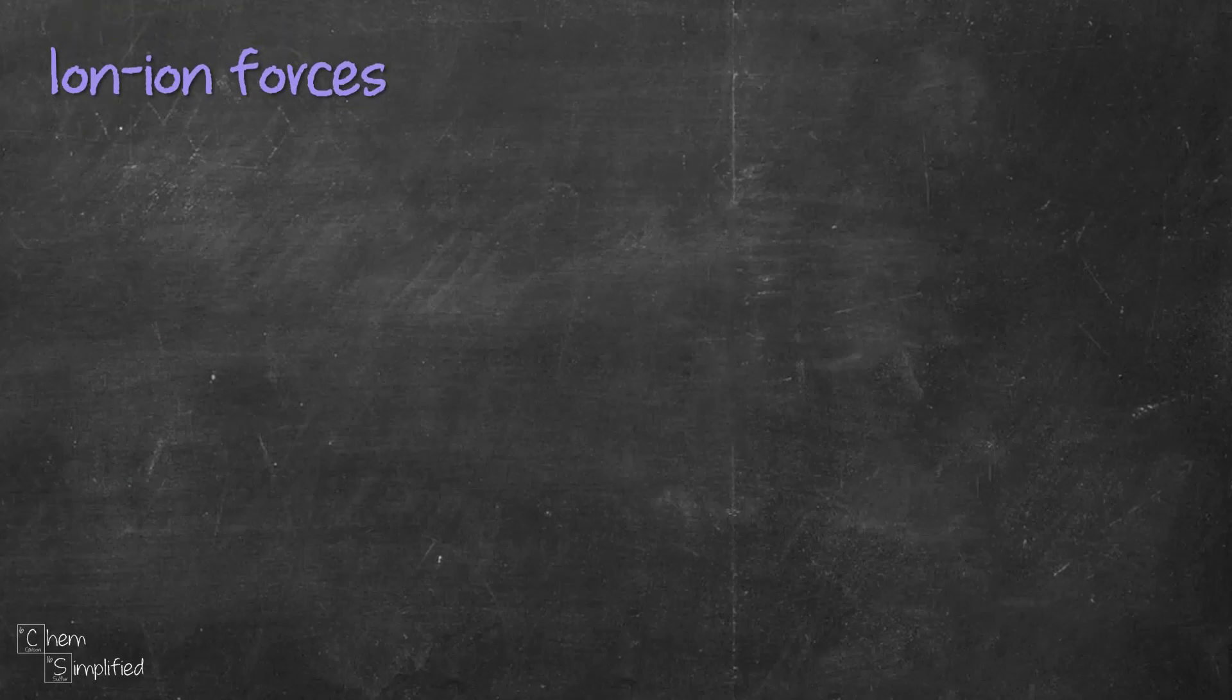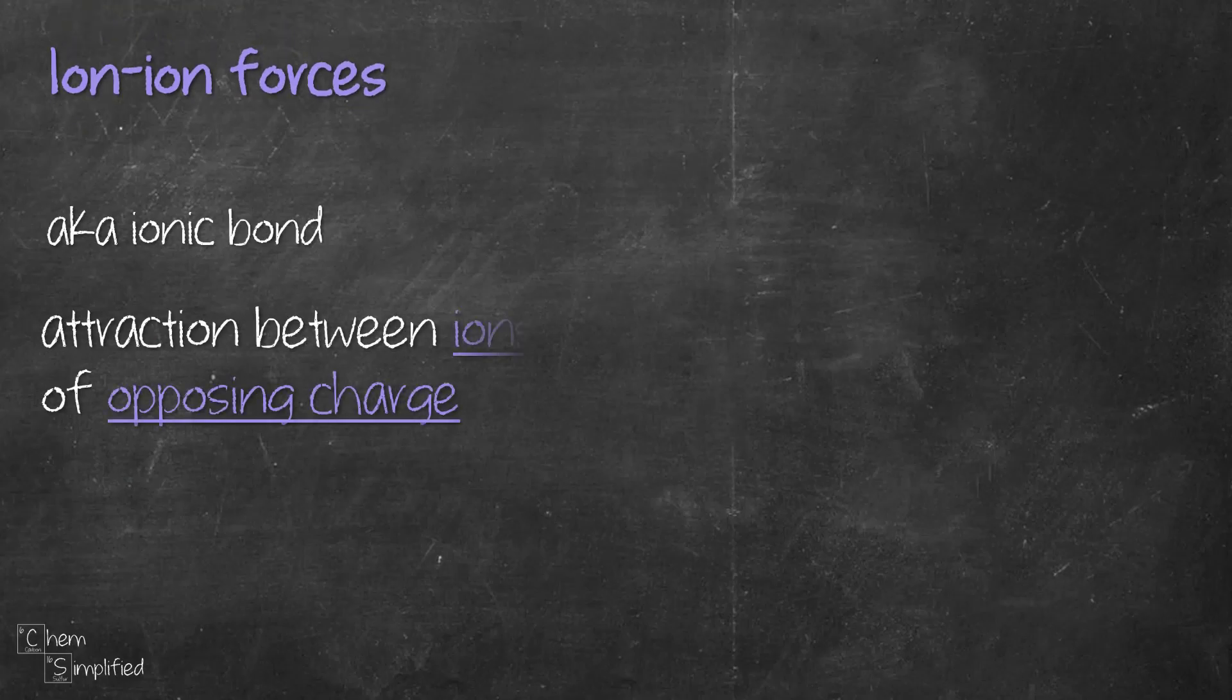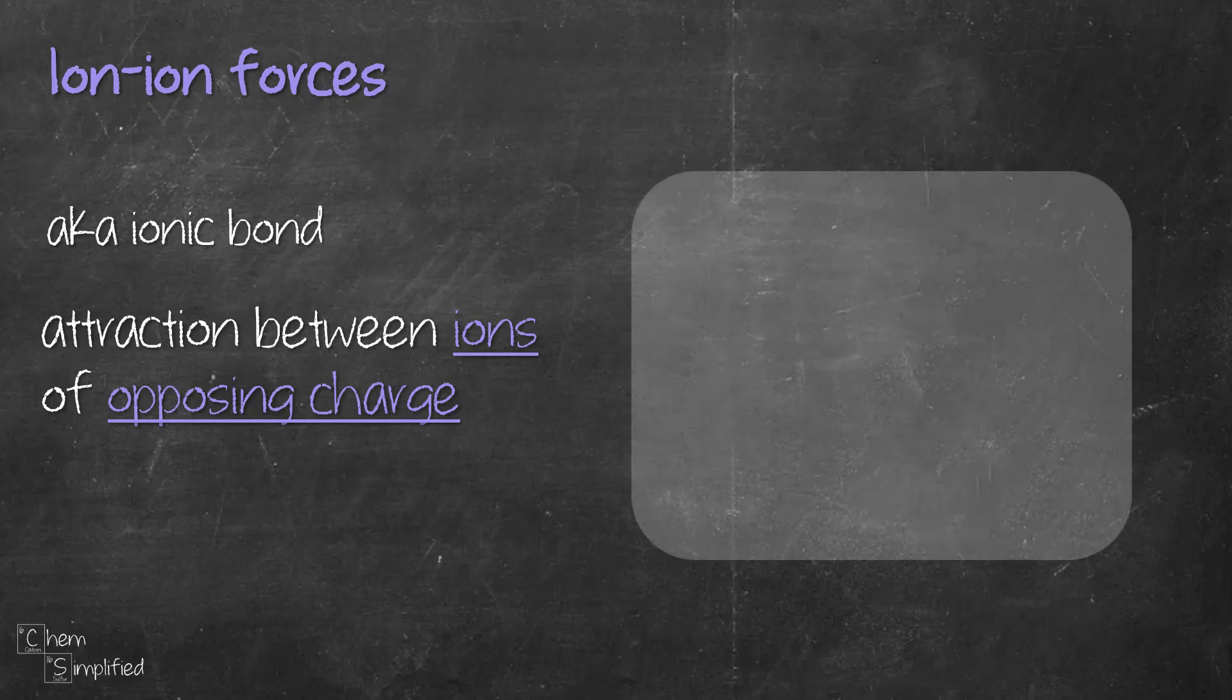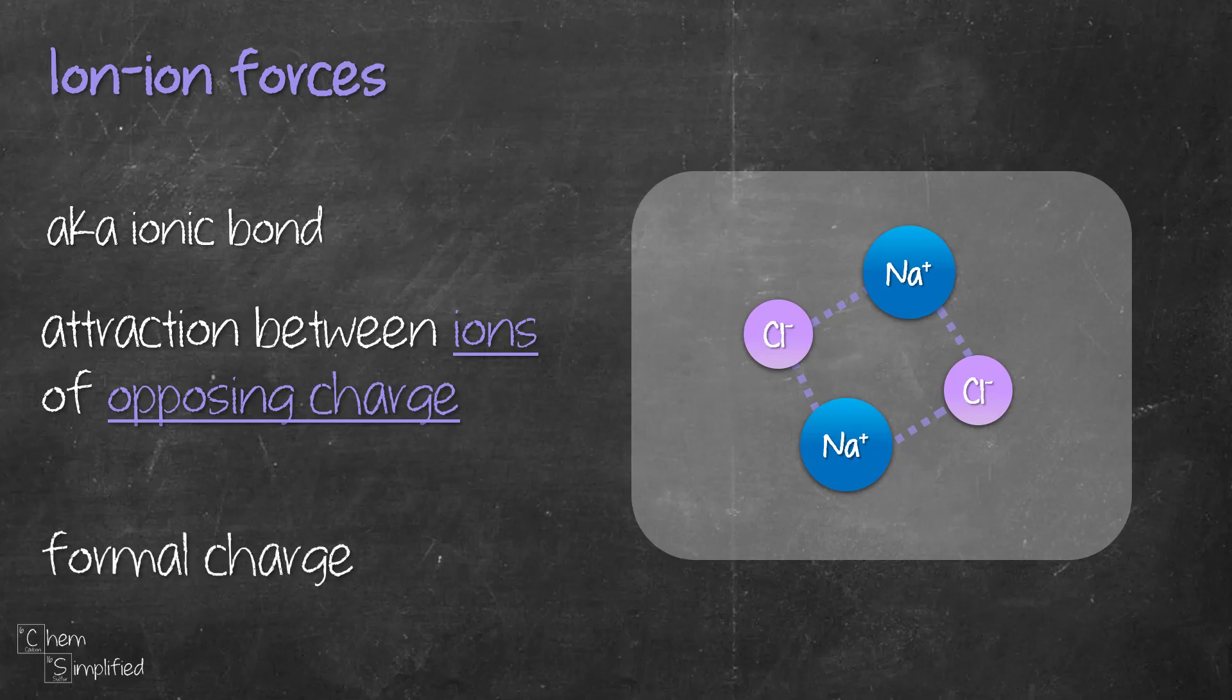And lastly, we get to ion-ion forces, which is basically ionic bond. It's the attraction between ions of opposite charge. So we take our NaCl example. We have Na plus and Cl minus ion. So the attraction between the two types of ion, that attraction is the ion-ion forces. Previously, we mentioned that ion-dipole forces is stronger than dipole-dipole because ions carry actual positive and negative charges. So it's no surprise that ion-ion forces is the strongest of all the intermolecular forces we have seen.